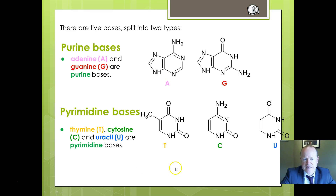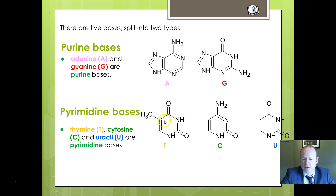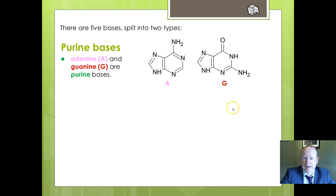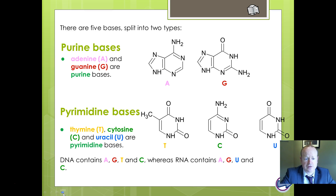Those bases — adenine, guanine, thymine, uracil, and cytosine — are grouped together. We've got purines, which have two rings, and pyrimidines, which only have one single ring. There's all kinds of fancy stuff sticking off the edge that you're not expected to know in detail — it's more about considering how they join up together, which we'll look at in a little bit more detail shortly.